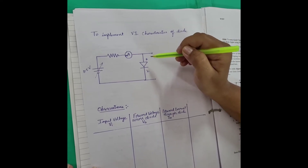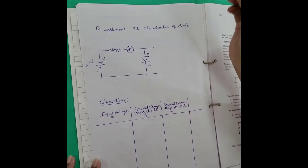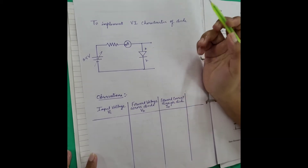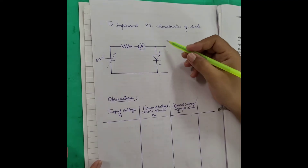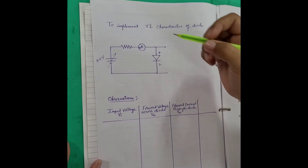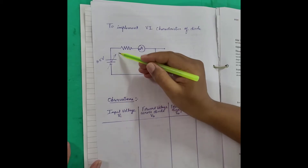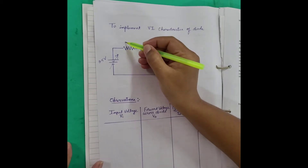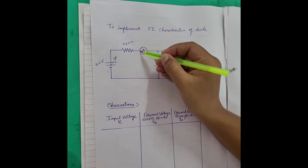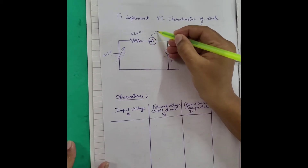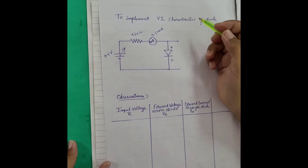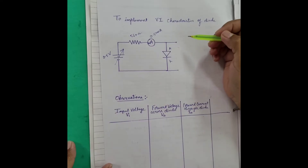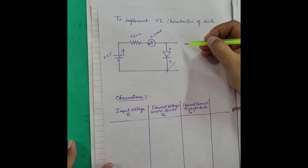Today in this practical, we will be implementing the forward bias and the reverse bias as well, and we will be observing the readings of the forward bias and the reverse bias. The circuit diagram is like this: there is a variable voltage source which we will be varying from 0 to 5 volt, a series resistance of 560 ohm, and a milli ammeter in the range of 0 to 50 milli ampere. This is used to measure the current through the circuit, and we will also measure the voltage across the diode using a multimeter.